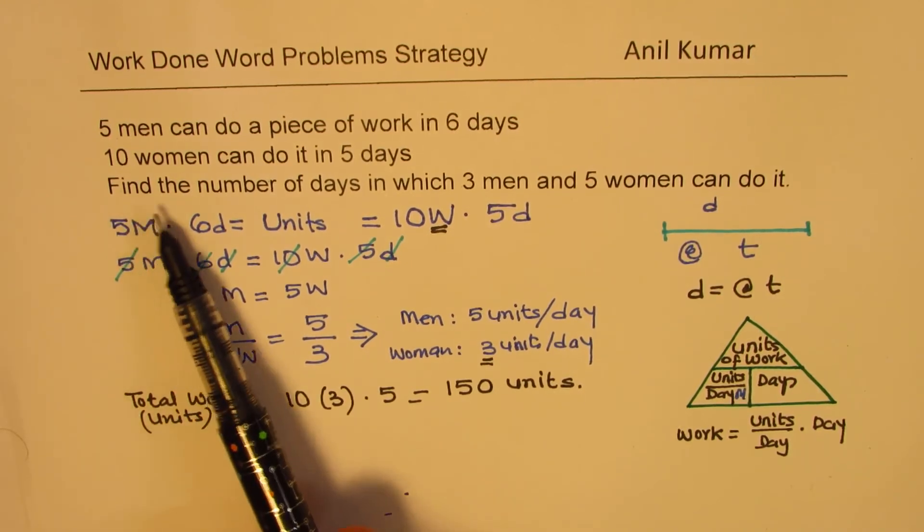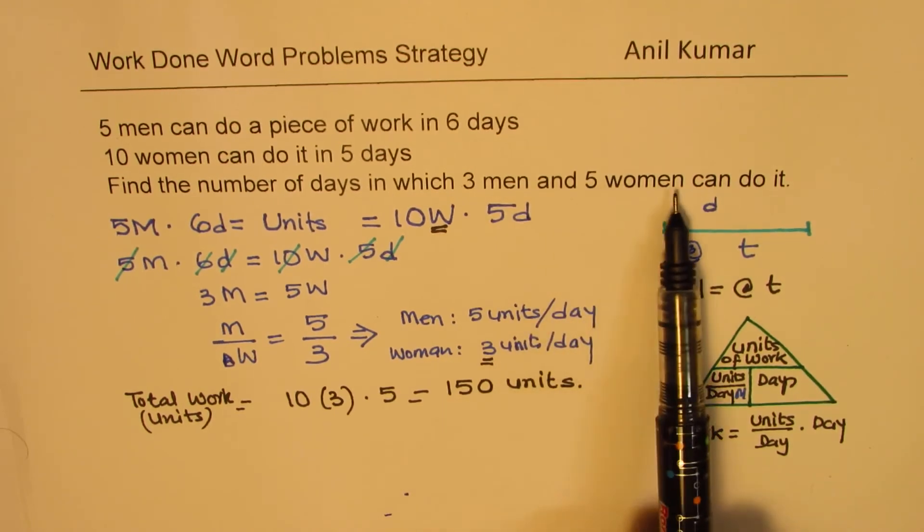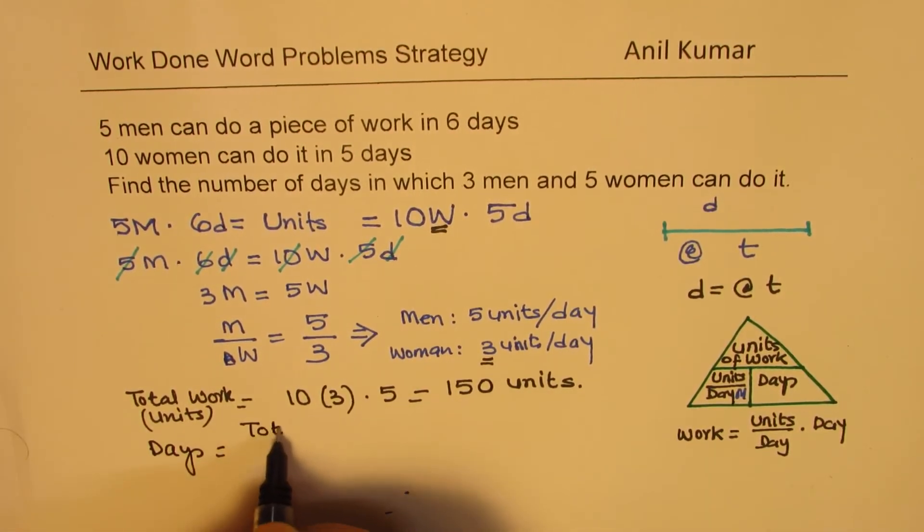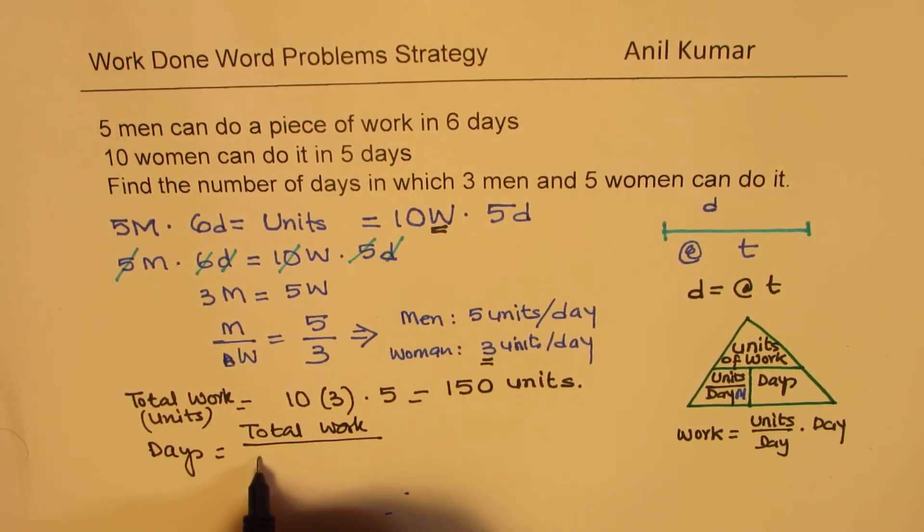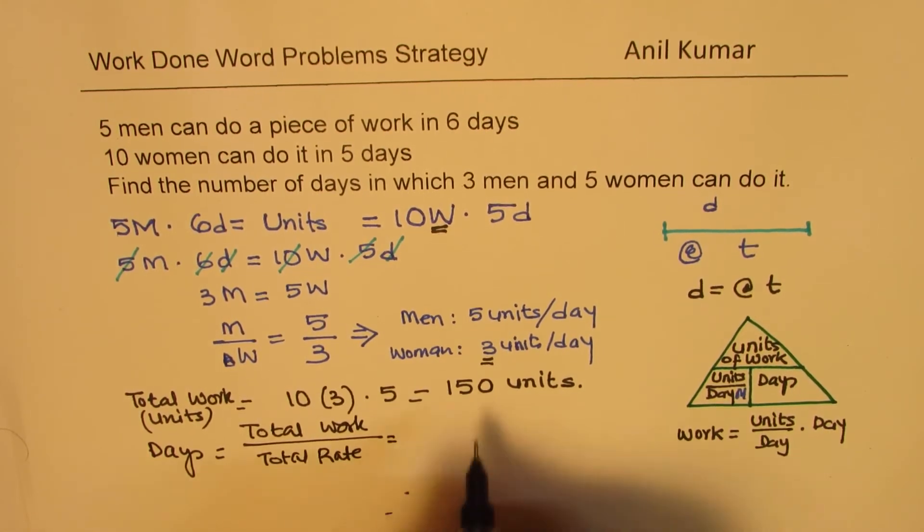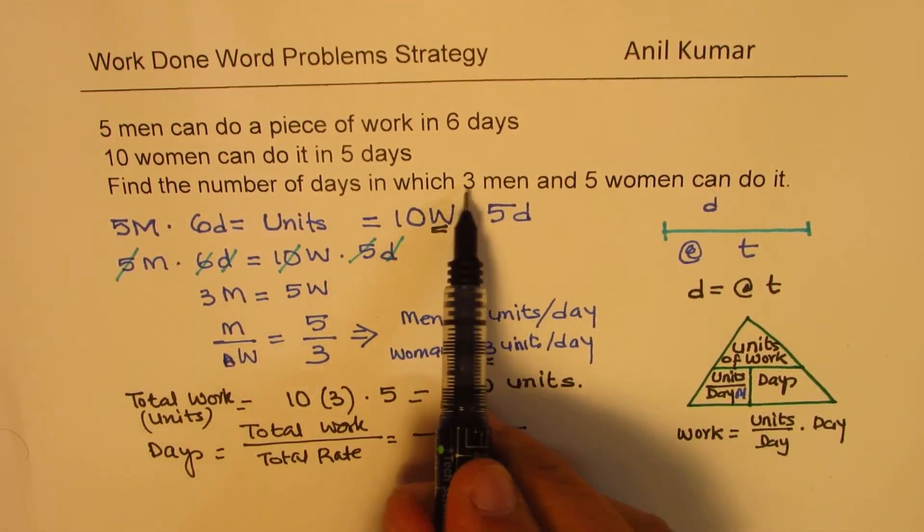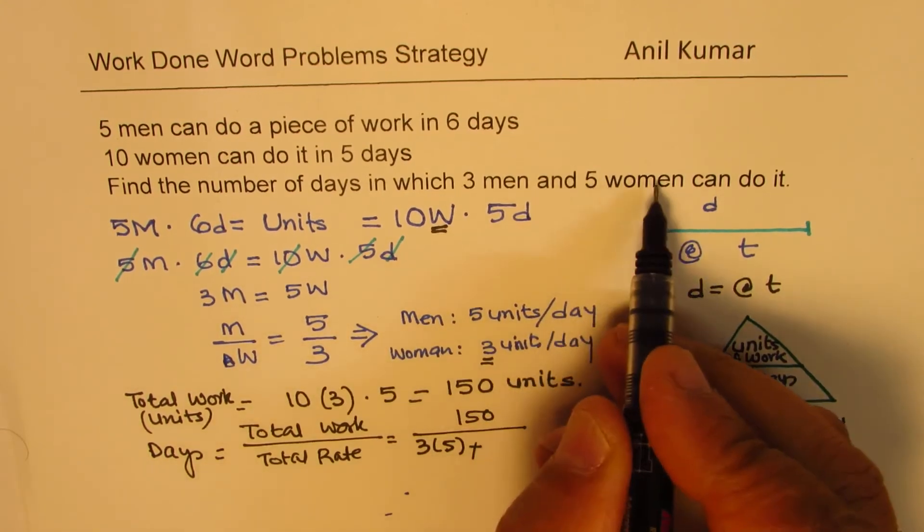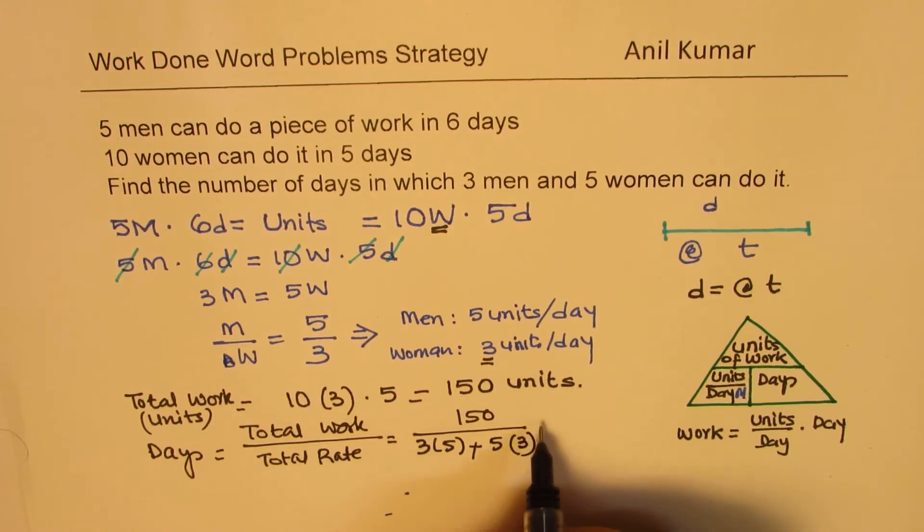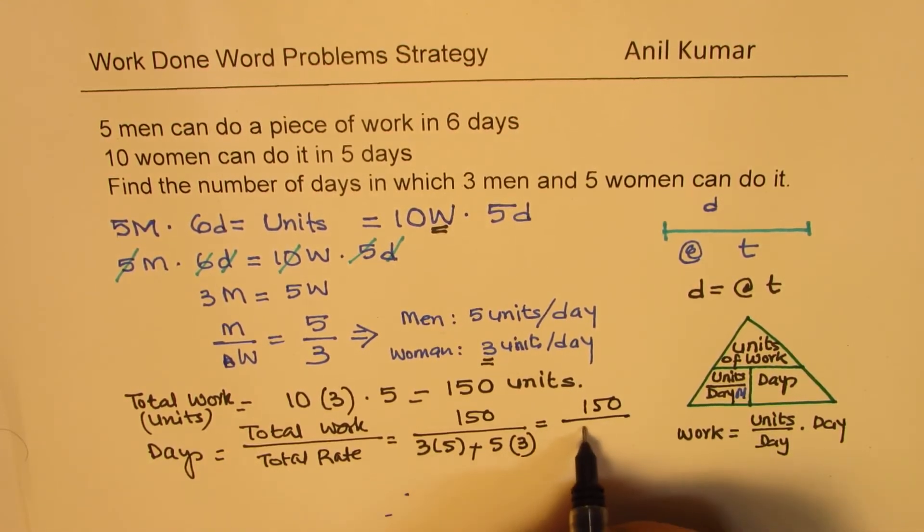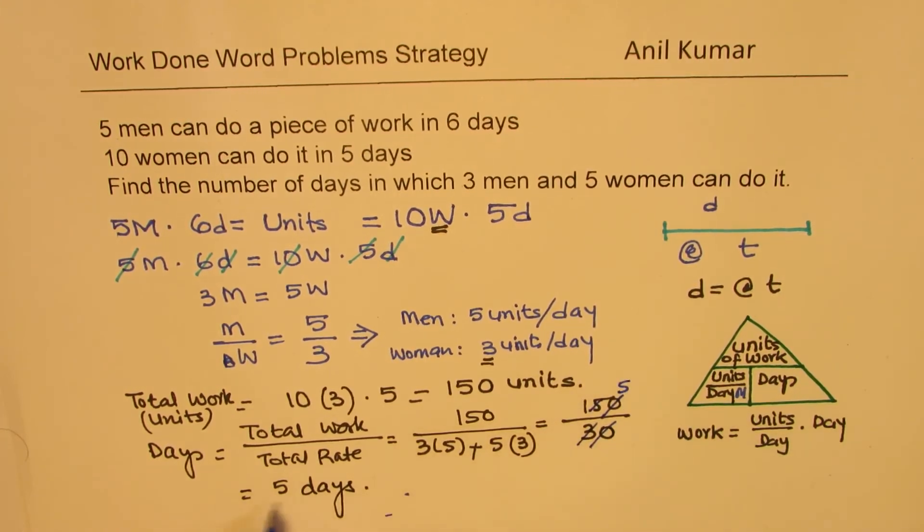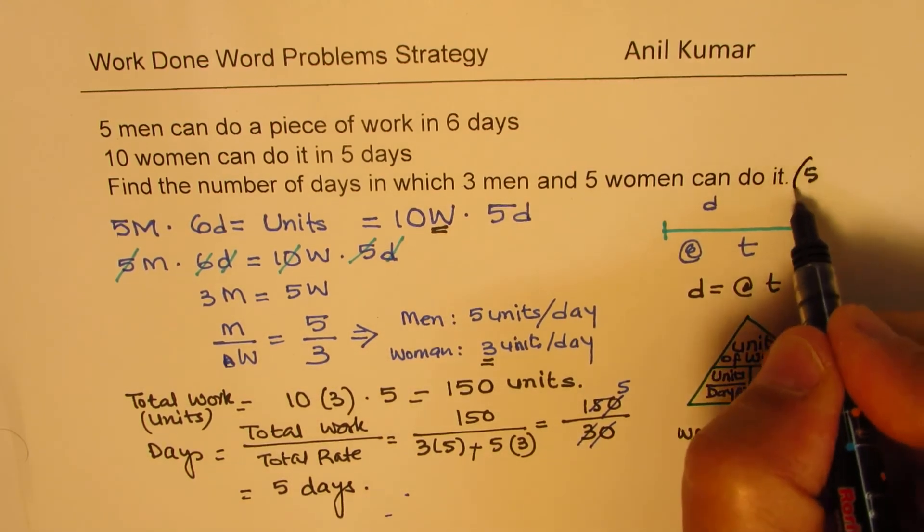Now, let's get back to the question. What do we need? Find the number of days in which three men and five women can do it. So, now we want the number of days for we know the total work. Now, we can write with total rate. Total work is 150 and there are three men. Each men can do five units per day. So, we'll multiply three by five. So, we get three times five plus we want five women. So, five women will mean five times three. So, what we get here is 150 over 15 plus 15 which is 30 and then we get five days. So, this could be easily simplified and when you cancel this, you get five. So, we get five days is what they will take.